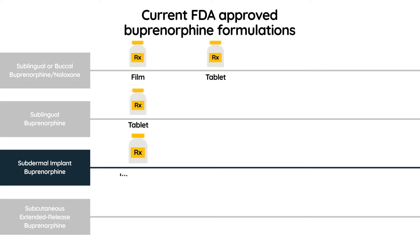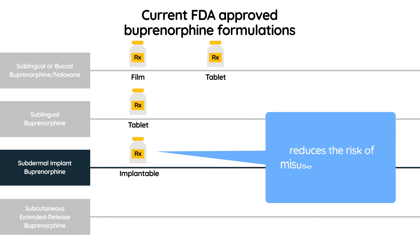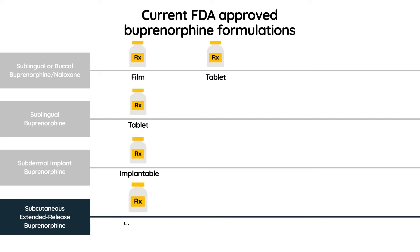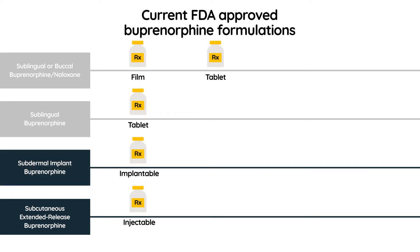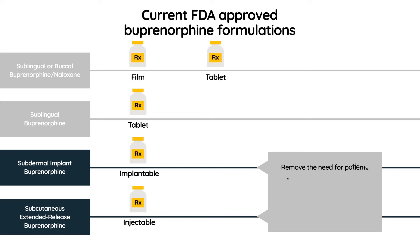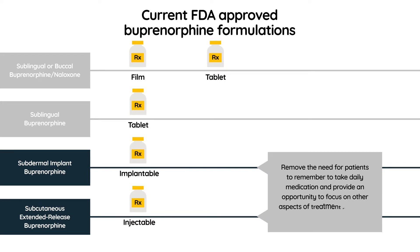Subdermal buprenorphine, an implant formulation, delivers a steady low dose over a six-month period and reduces the risk of misuse and diversion. Extended release buprenorphine is a subcutaneous injectable formulation that delivers buprenorphine at a controlled rate over a one-month period. Both the implantable and injectable formulations remove the need for patients to remember to take daily medication and provide an opportunity to focus on other aspects of treatment related to psychosocial support.